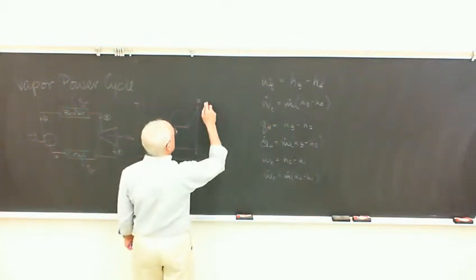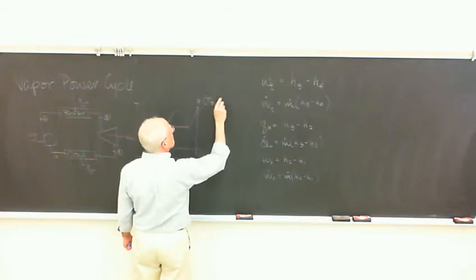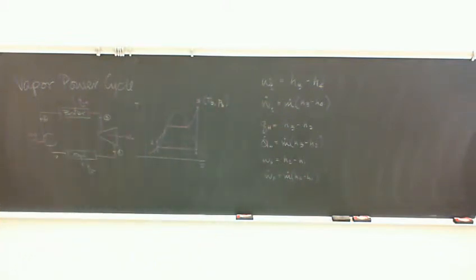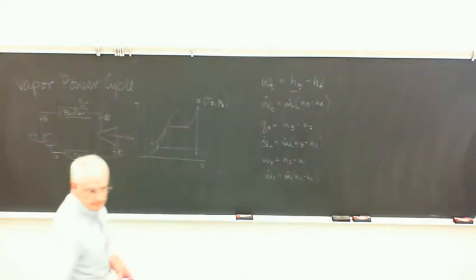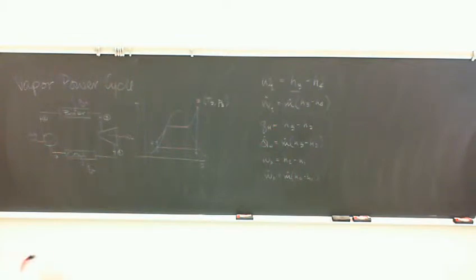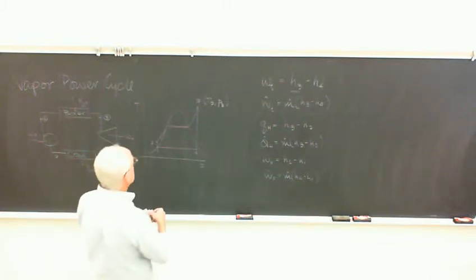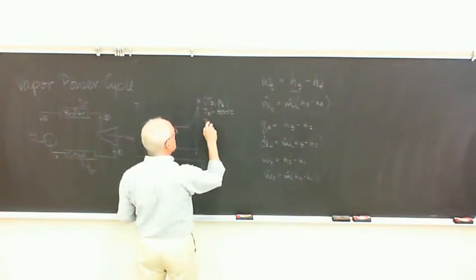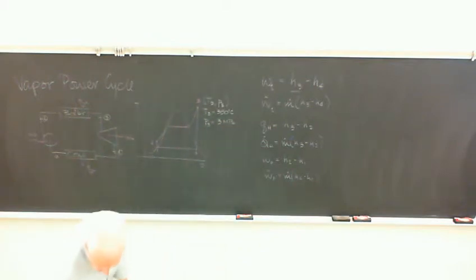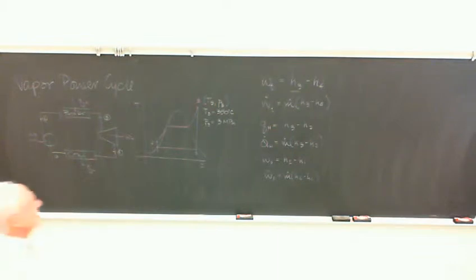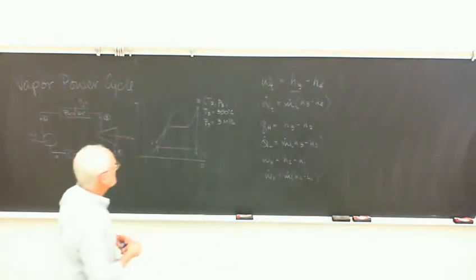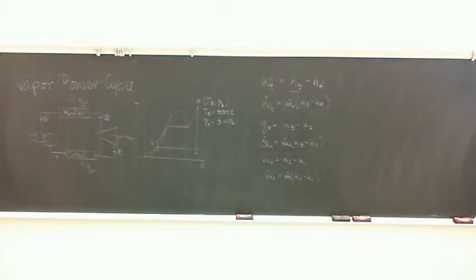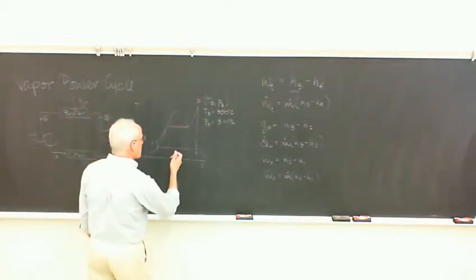Typically we have for state point three both the temperature and the pressure, which fixes that state point — we can just go to the superheat tables and look it up to get H3. We can put numbers to that: 3 megapascals and 350 degrees C, up in superheat. We'll need to find the enthalpies at all of the state points.